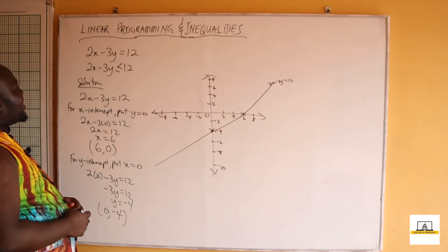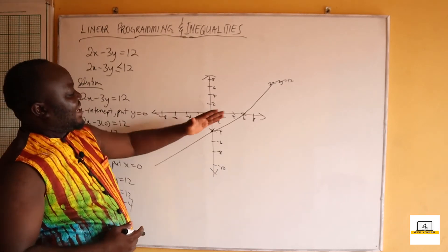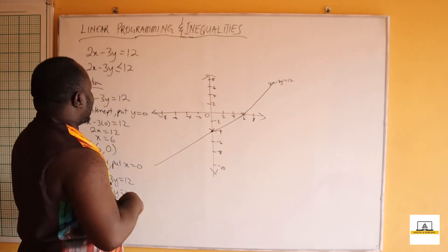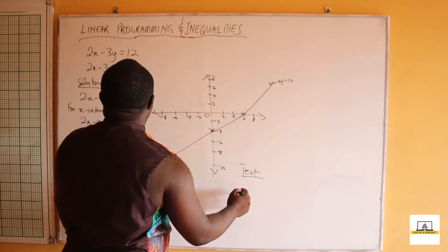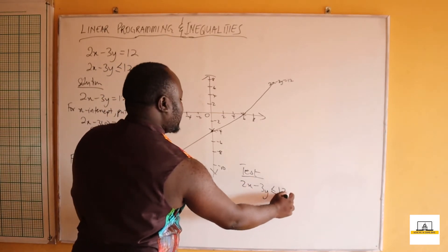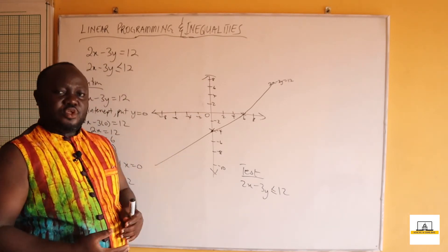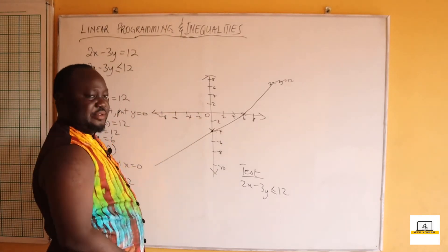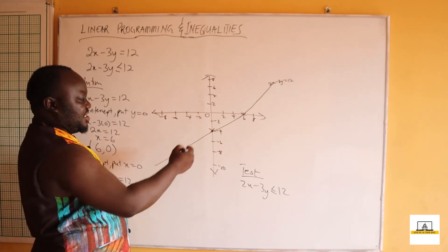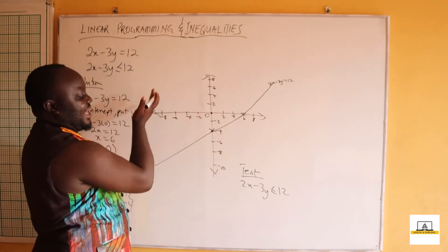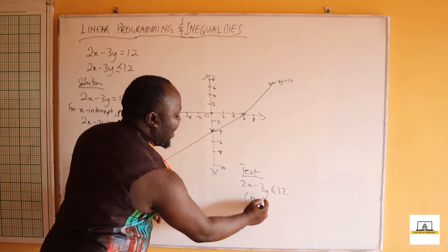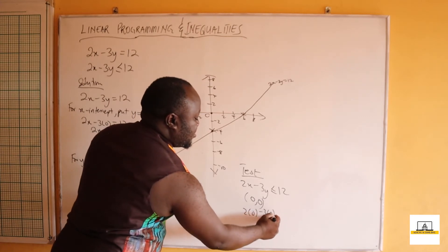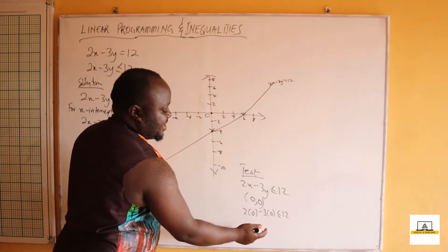Now we need to indicate where 2x minus 3y less than or equal to 12 will lie — it can be above or below the line. We test by picking a point, but do not pick a point on the line itself. I'll pick a point above the line: the origin (0, 0). Substituting: 2 times 0 minus 3 times 0 is less than or equal to 12, which gives 0 is less than 12.